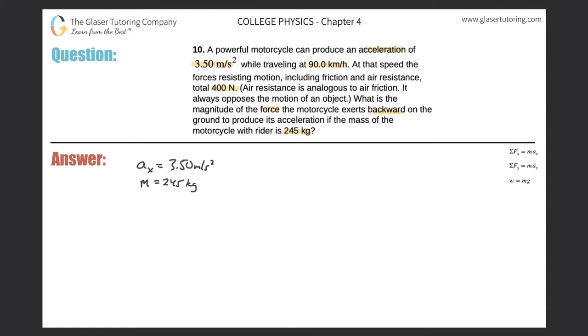Now, just from this information, if the mass of the motorcycle and the rider is 245 and that same motorcycle is experiencing an acceleration of 3.50 meters per second squared, then we will certainly be able to calculate the net sum of all the forces in the x direction. How? By using our formula over here on the right.